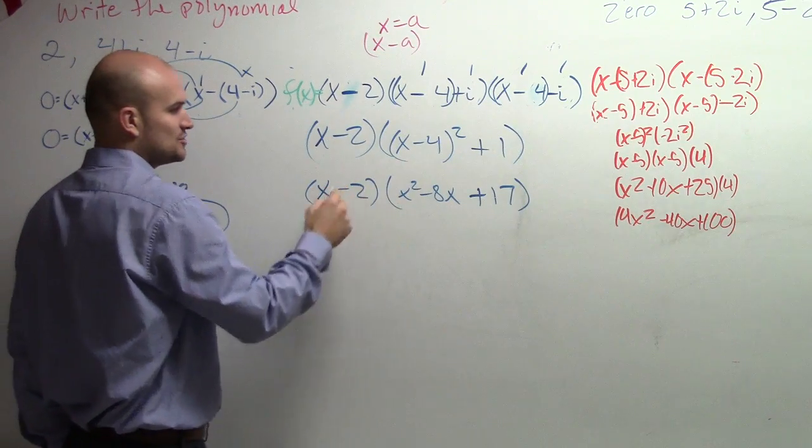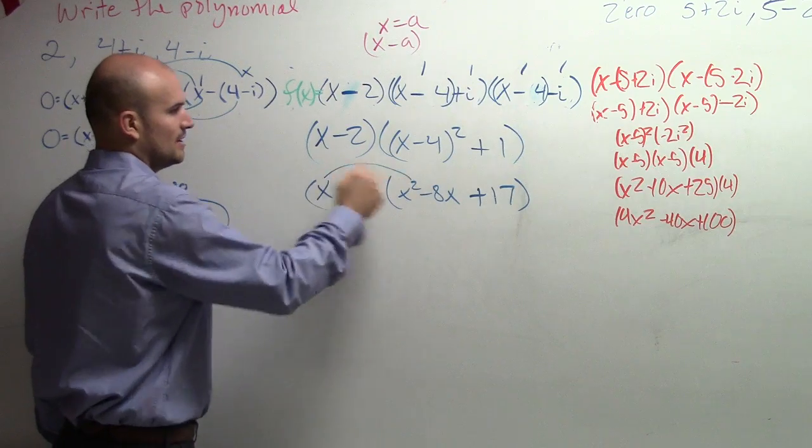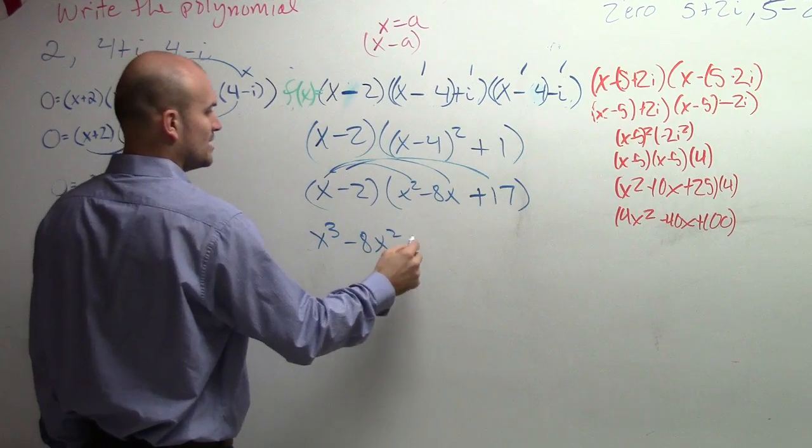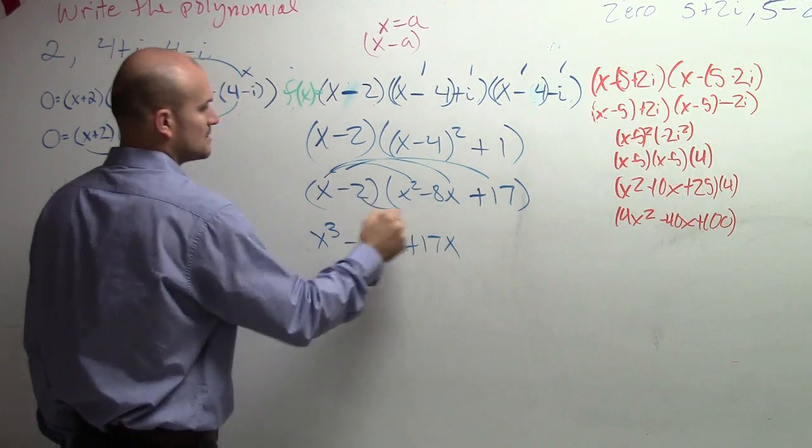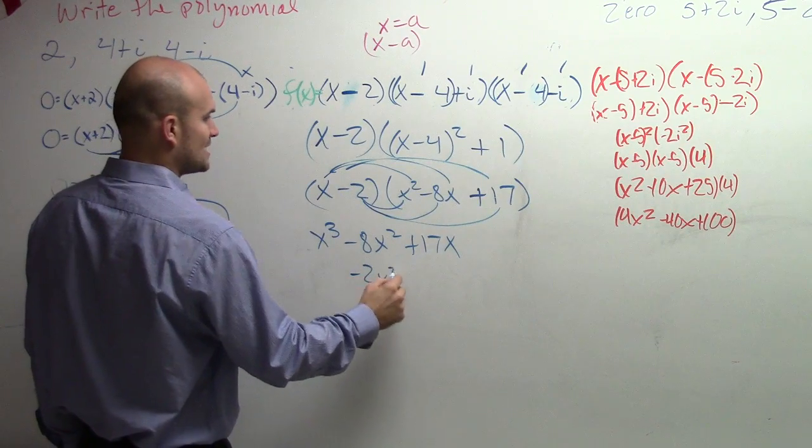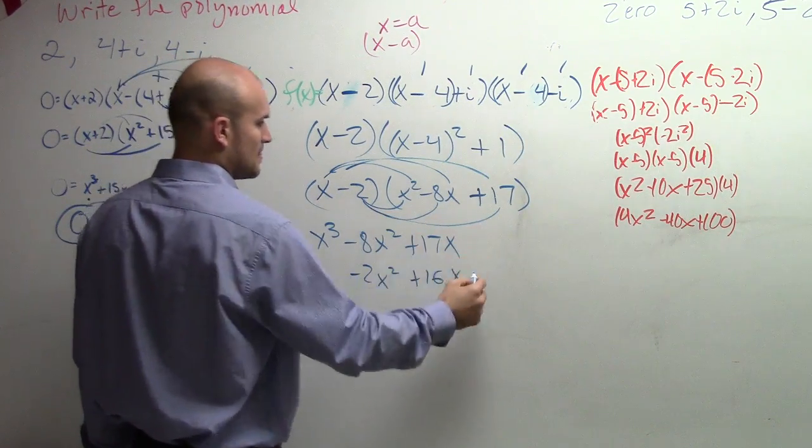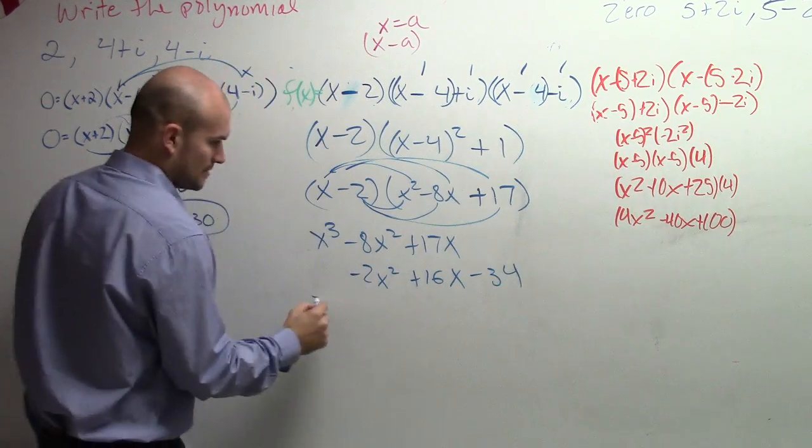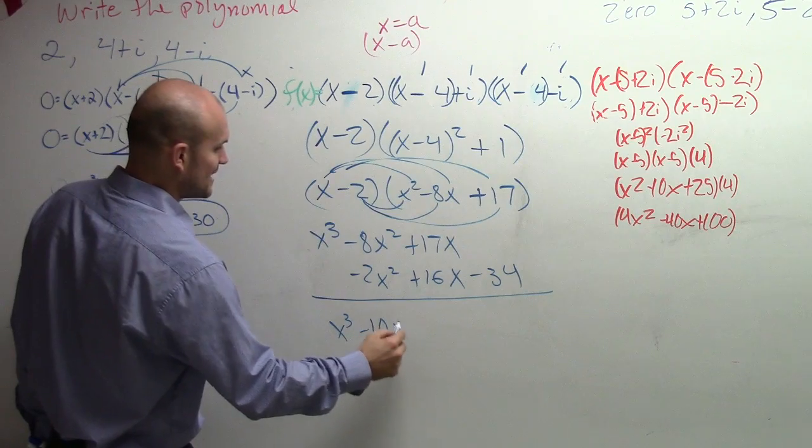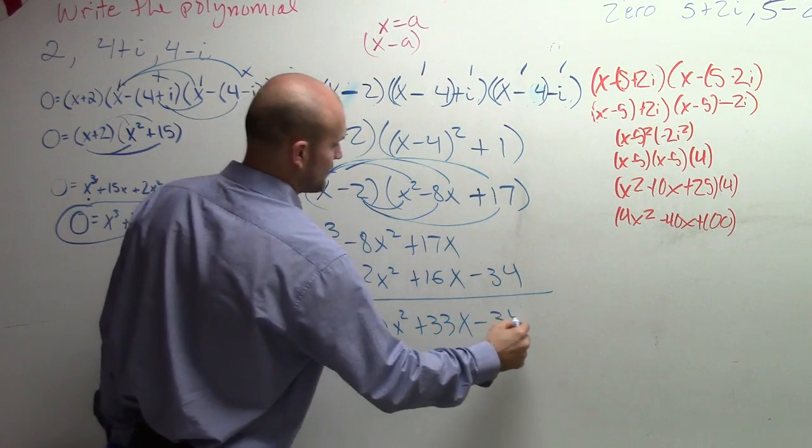So again, I have to use distributive property. Or multiply a trinomial times a binomial. So x times x times x. So I get x cubed minus 8x squared plus 17x. Multiply times every term. Negative 2x squared plus 16x minus 34. Combine my like terms. So what happens?